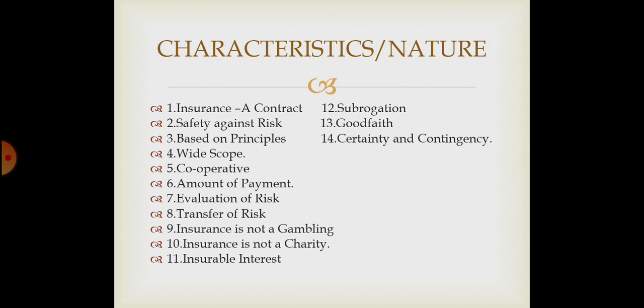Next, insurance is not a charity. In charity, you give the amount and you don't get anything back. But in insurance, in return for paying a premium, the insured gets coverage. The insurance can be made on property or by a particular person. If something goes wrong, then the insured's interest will be affected. If there is a person's death, there will be a family effect. If there is damage to property, there will be a financial loss. This is insurable interest — if a person has an insurable interest in a property or life, they can take insurance.